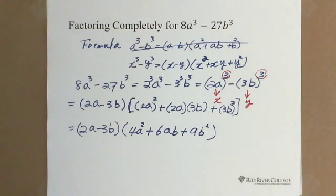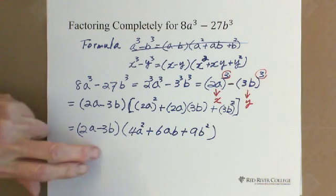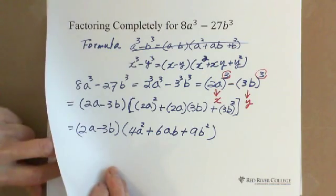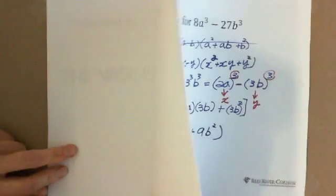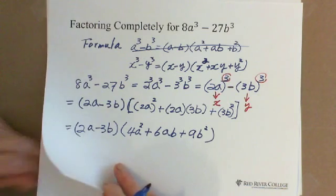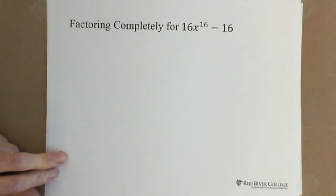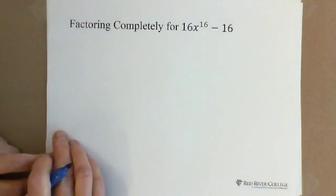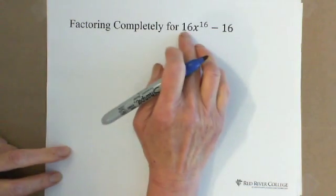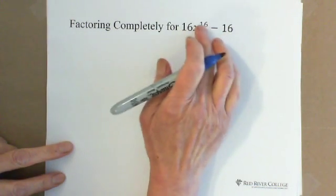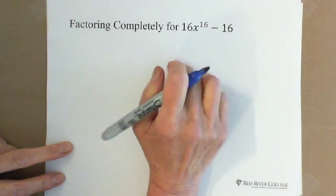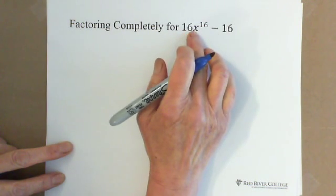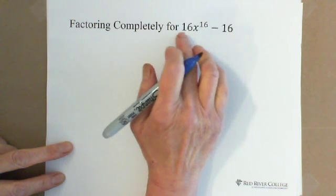That's the first question. Second question: factoring completely for 16x¹⁶ minus 16. Obviously, 16, 16, 16 — this 16 is the exponent, and this 16 in front of x is the coefficient.